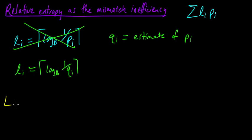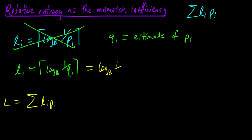Let's compute it and see what happens. Our expected codeword length is the sum of L_i times P_i. Let's break this expression up into two parts. We started with log base B of 1 over Q_i and rounded it up, so we added some small rounding amount, which we'll call R_i. Since we just rounded up to the nearest integer, R_i is going to be between zero and one.